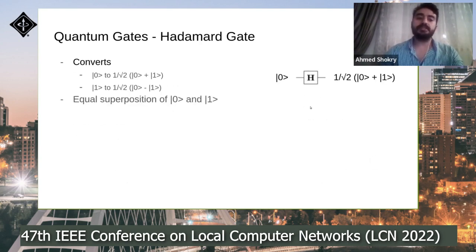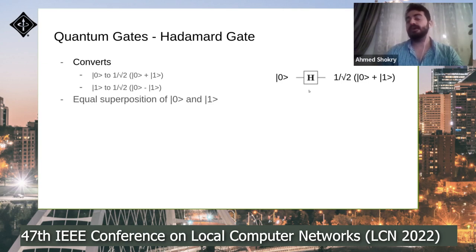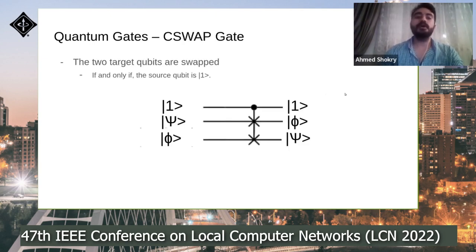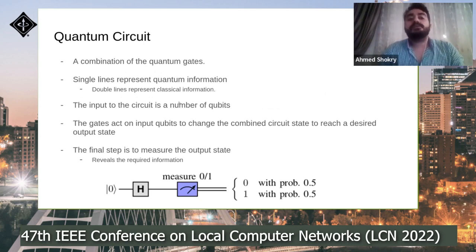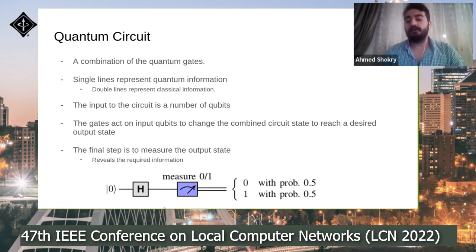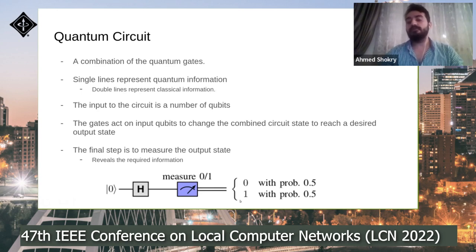The Hadamard gate creates an equal superposition of both zero and one. Feeding |0⟩ gives (1/√2)|0⟩ + (1/√2)|1⟩. The controlled-SWAP gate swaps two target qubits |ψ⟩ and |φ⟩ if and only if the source qubit is one. A quantum circuit combines quantum gates; a single line represents quantum information, double line after measurement represents classical information. The final step is to measure the outcome — obtaining zero or one, each with probability one-half — so one must be careful when designing quantum algorithms as the outcome is probabilistic.